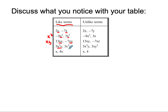This has x squared y, and this has x squared y. Since they both have x squared y, they are like terms. This one has an understood 1 in front of it, they both have an x, so they're like terms.